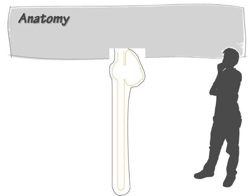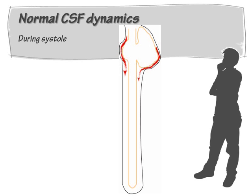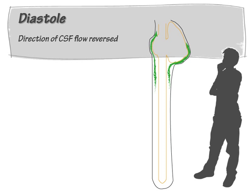In this schematic diagram, you can see the cerebellum, the brain stem, the spinal cord, the subarachnoid space surrounding these structures, and the arachnoid membrane. In normal individuals, the subarachnoid space of the posterior fossa freely communicates with the subarachnoid space surrounding the spinal cord. During systole, CSF flows from the intracranial compartment into the spinal subarachnoid space, and this flow is reversed during diastole.